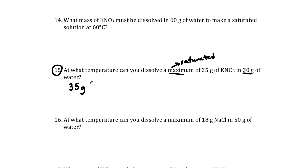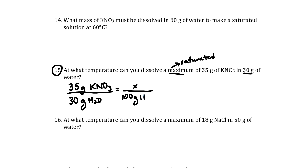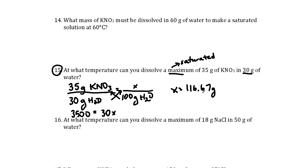So 35 grams of potassium nitrate in 30 grams of water — what is the equivalent if we have 100 grams of water? To solve for this x value, you cross-multiply. So I would get 3,500 equals 30x, and then to solve for x I divide both sides by 30, which gives me 116.67 grams.